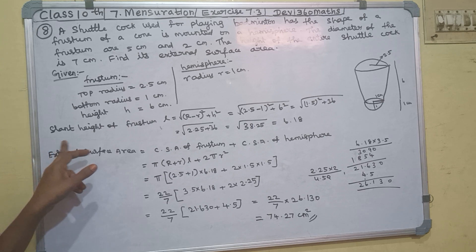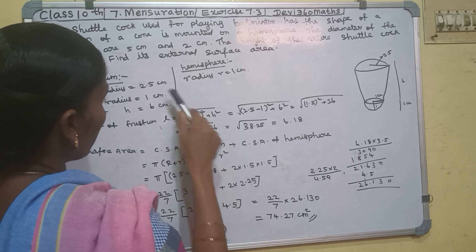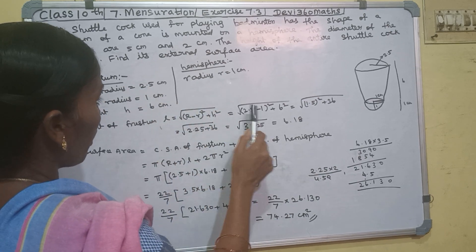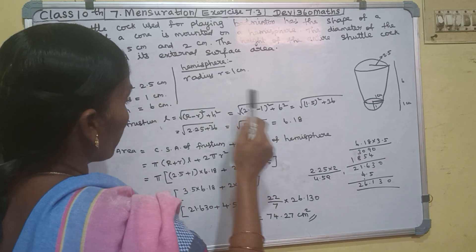Next step is slant height of the frustum. If you have the formula, L is equal to square root of (R minus r)² plus h². Now, capital R is equal to 2.5, small r is equal to 1, and h is equal to 6.